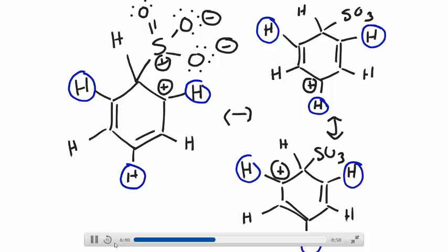If, on the other hand, you had a group in the meta position, which I'm circling here in green, it would have no effect on the number of resonant structures for this carbocation intermediate. There would just be the three.